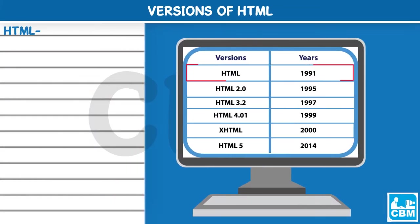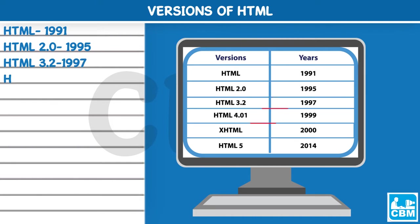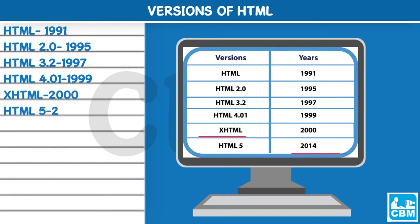Versions of HTML: HTML 1991, HTML 2.0 in 1995, HTML 3.2 in 1997, HTML 4.01 in 1999, XHTML in 2000, and HTML 5 in 2014.